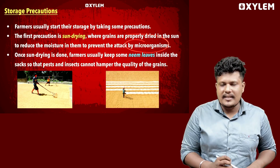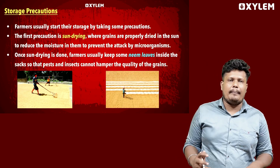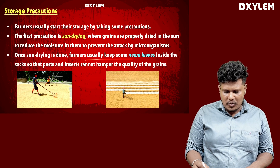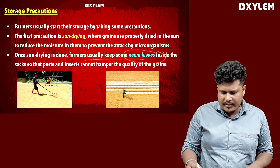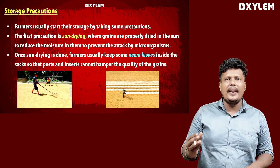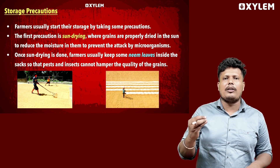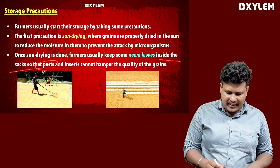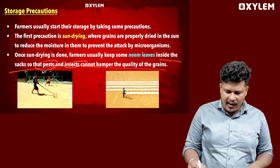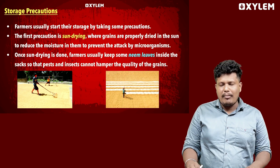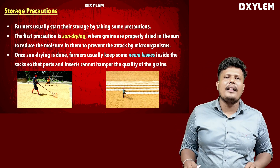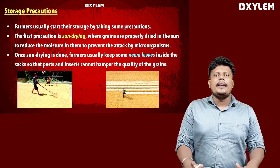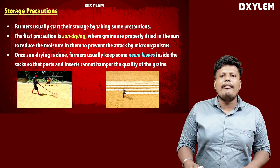Once the sun-drying is done, farmers usually keep neem leaves. We will talk about keeping the grains inside the sack so that pests and insects cannot hamper the quality of the grain. In the case of storage precautions, the grain must be very dry.